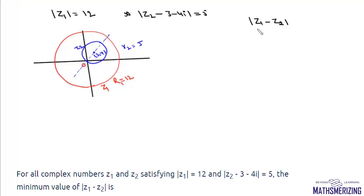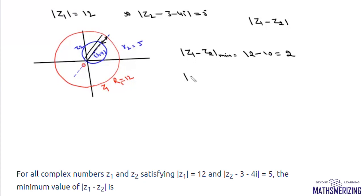We need to find minimum and maximum of mod(Z1 - Z2), which is the distance between Z1 and Z2. The minimum distance occurs along the line joining the centers: radius 12 minus the diameter of the smaller circle (10), giving 2 units. The maximum value also occurs along this line: 12 plus 10 equals 22 units. So minimum is 2 and maximum is 22.